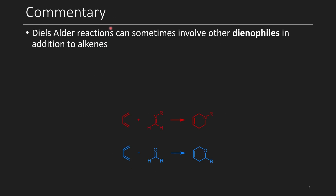The Diels-Alder reaction can sometimes involve other dienophiles in addition to the typical alkene. One example is an imine, which might have a strong electron-withdrawing group like a sulfonyl group or carbonyl. This just makes it more electrophilic and makes the reaction go faster. So here, instead of getting a cyclohexene as we would in a typical Diels-Alder, we would get a tetrahydropyridine species. If we were to instead use an aldehyde or ketone instead of an alkene, we would get a dihydropyran as our product.